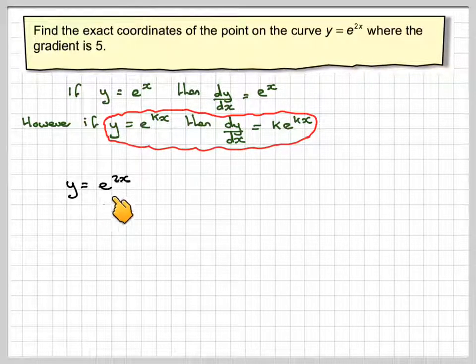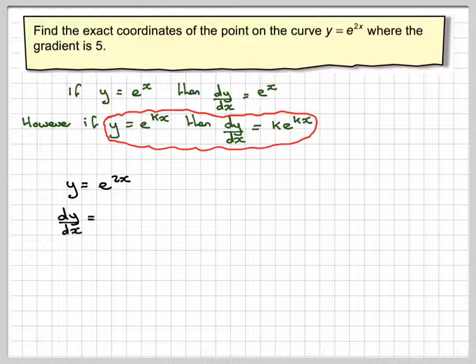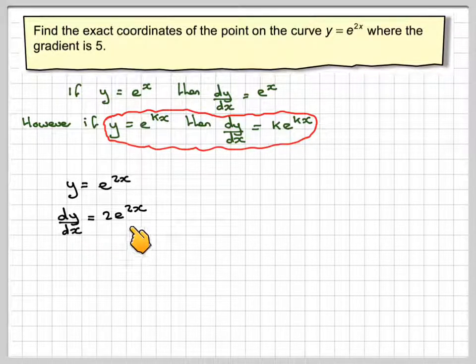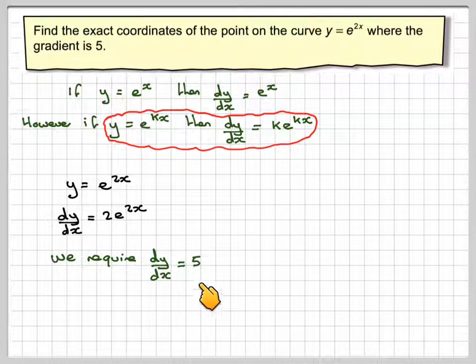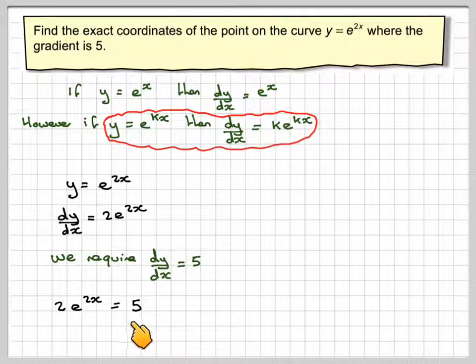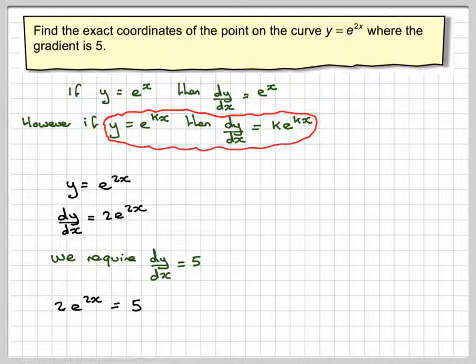So if y is equal to e to the 2x, then dy by dx is 2e to the 2x. We require the dy by dx to be equal to 5, so we take that, put it equal to 5. So 2e to the 2x is equal to 5, and then we now solve this.